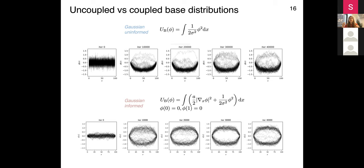This points to the fact that we need physics-informed parameterizations in order to leverage learning and push these methods to scale further. Incorporating domain knowledge - like the coupling term in the statistical field problem, or hardcore repulsions between molecules for molecular sampling - is key to making these methods work. That's part of future work, and it's exciting news for developments we will see in coming years.